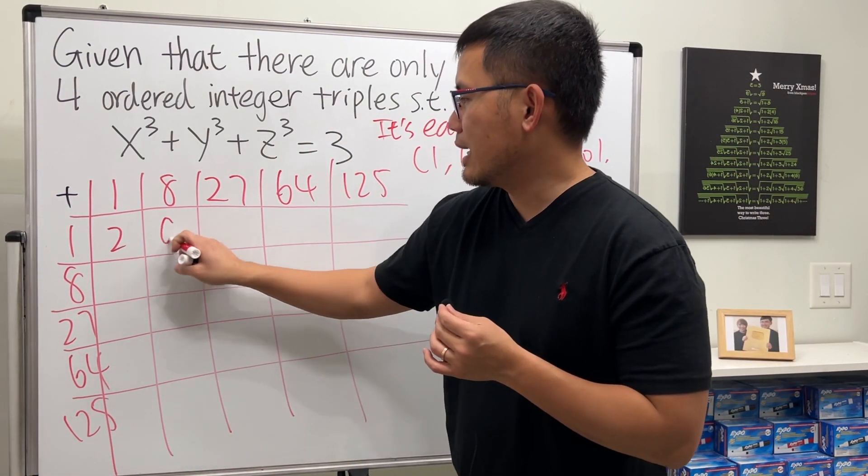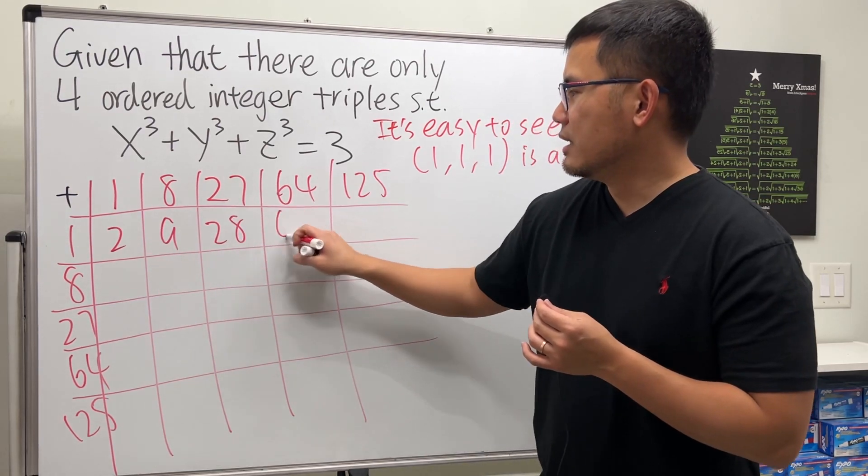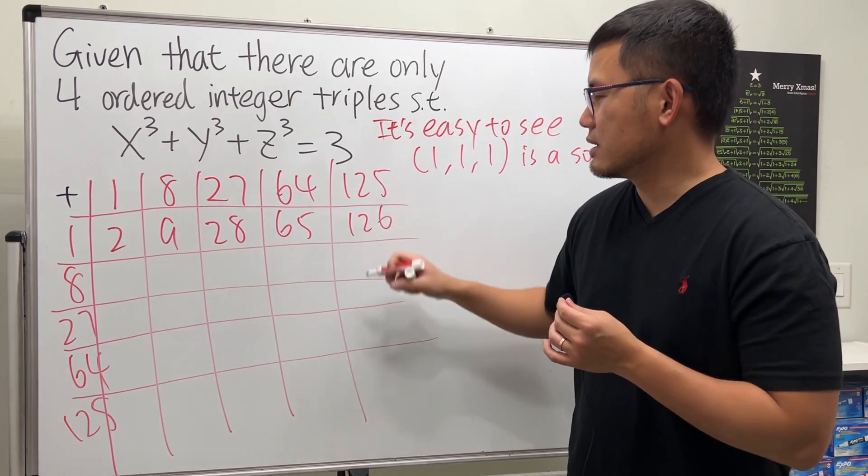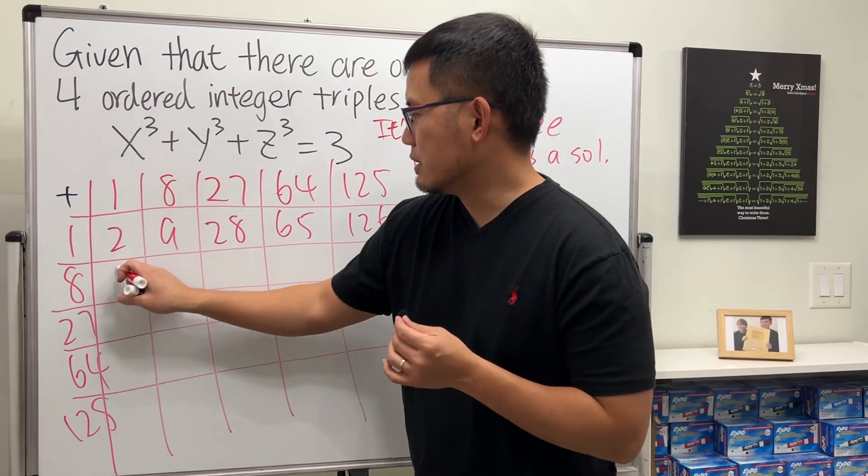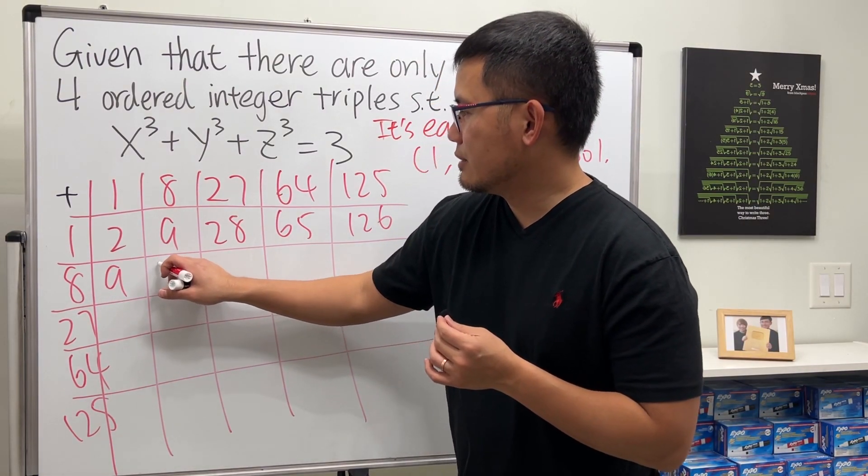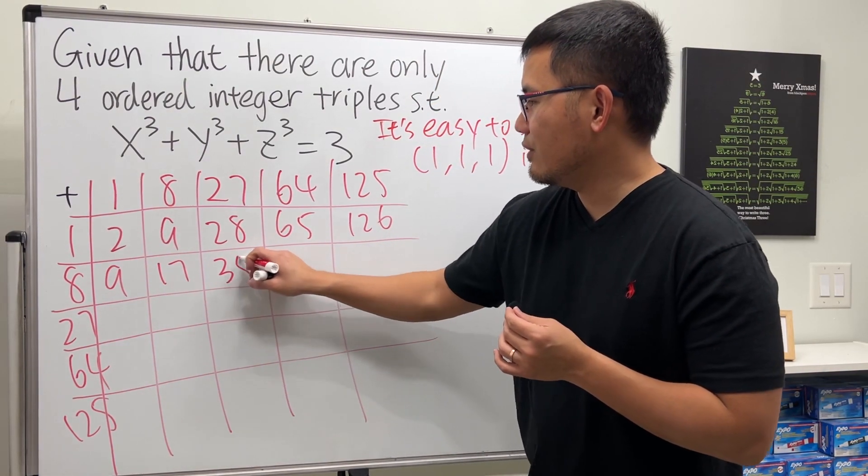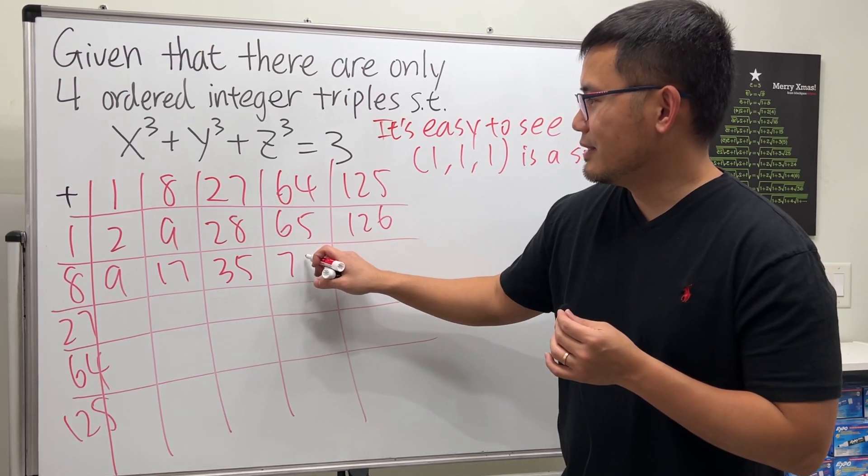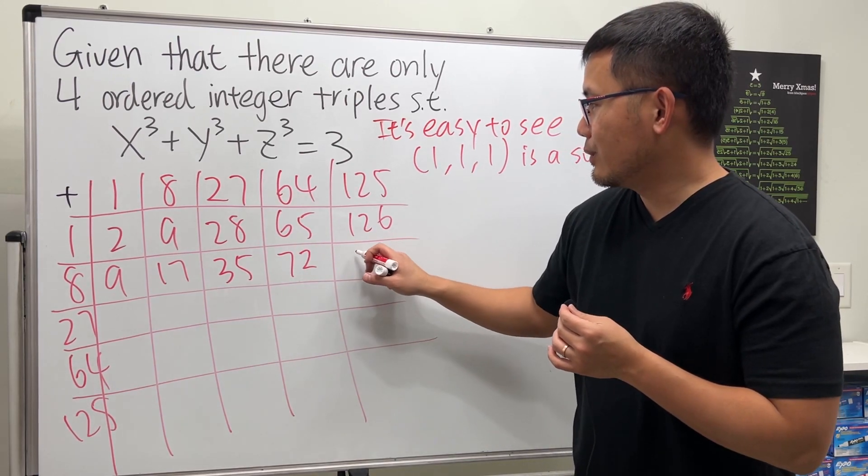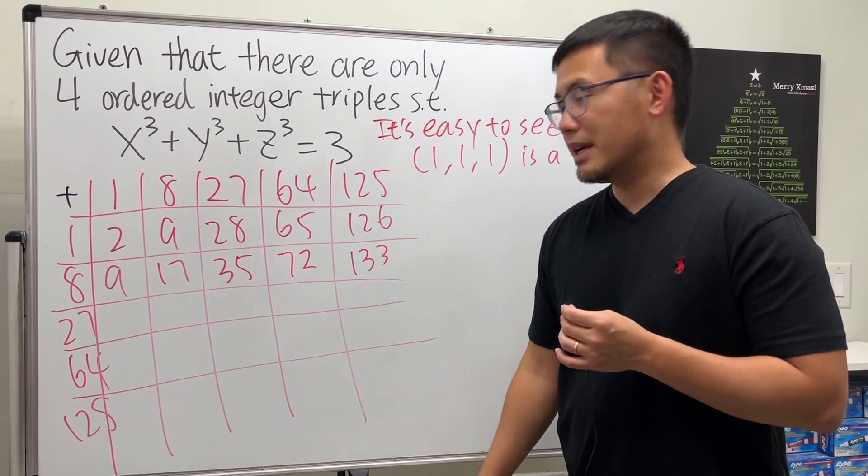like 1 plus 1 is just 2, and then 9, and then 28, and then 65, and then 126. And you can continue. So 9, and then 17, and then 35, and then 72, and then 133, and so on.